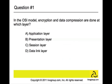Question number one: In the OSI model, encryption and data compression are done at which layer? The answer is B. Encryption and data compression are done at the presentation layer. This ensures the security of the data as it travels down the protocol stack. For example, one of the most popular encryption schemes associated with the presentation layer is the Secure Socket Layer, SSL protocol.